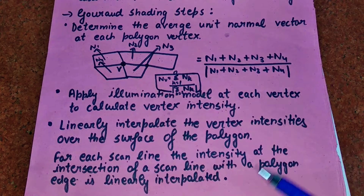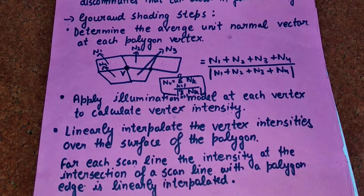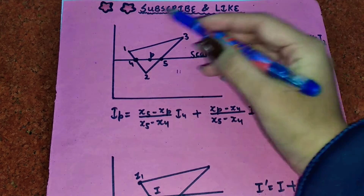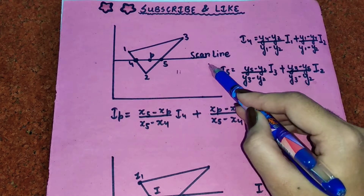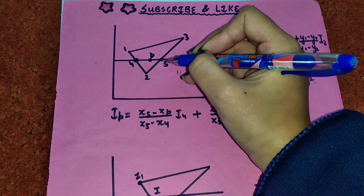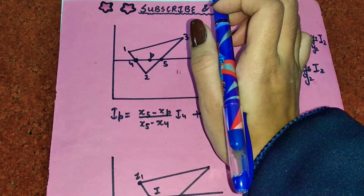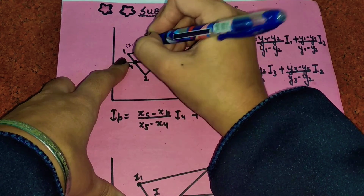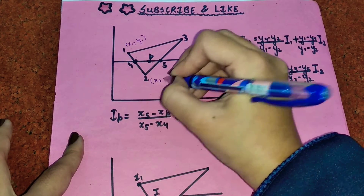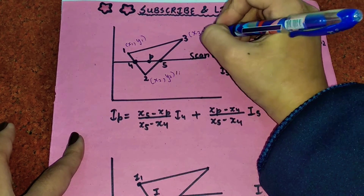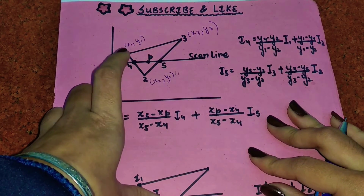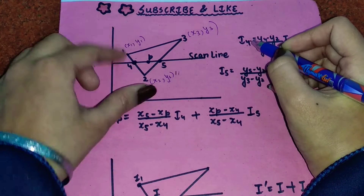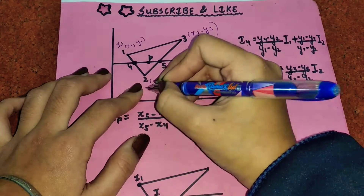For each scan line, the intensity at the intersection of the scan line with the polygon edge is linearly interpolated. In this example, a scan line intersects three points. At point 1 the coordinate is (x1, y1), at point 2 it is (x2, y2), and at point 3 it is (x3, y3). I want to calculate the intensity I4.